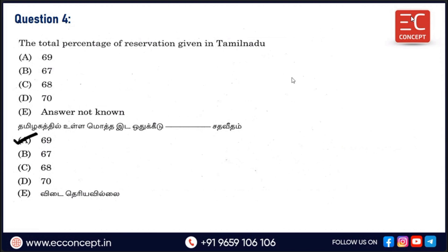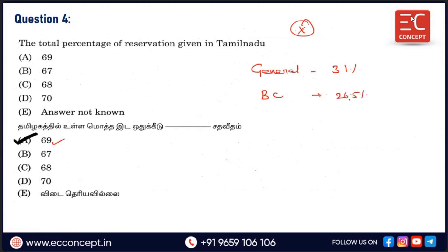The total percentage of reservation given in Tamil Nadu is 69% — a very important and very basic question. In Tamil Nadu, we have reservations. BC is 26.5%, BC Muslim is 3.5%, MBC is 20%.